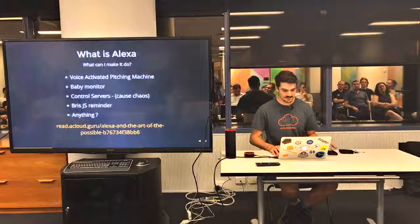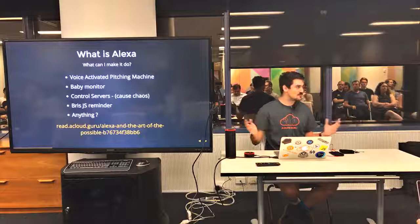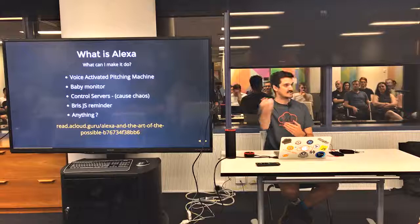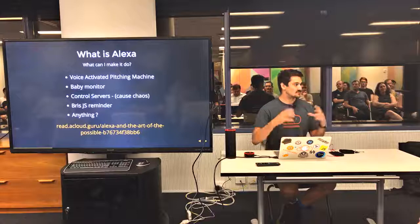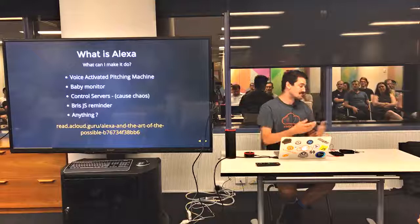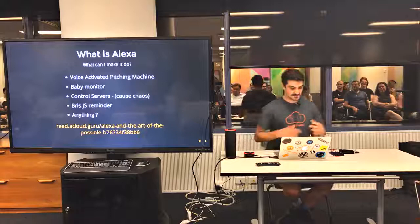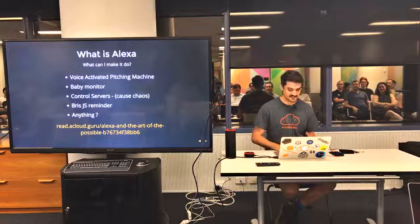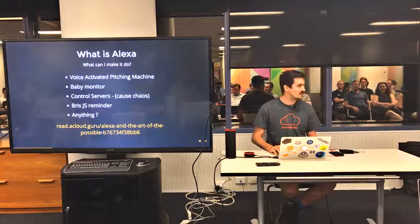So what are the things you can make it do? It's really broad — it's just another interface and a way of interacting with something. People have made things like a voice-activated pitching machine where you can ask it to pitch the next ball at you. There's been baby monitors where you can ask Alexa whether your child is awake or asleep. You can control servers, which is what our project did. I even set up a BrizJS reminder. There's a lot of possibilities — it's a really cool platform.